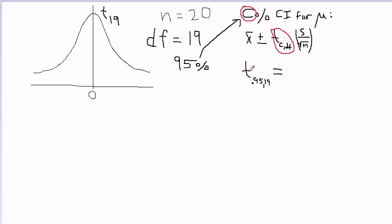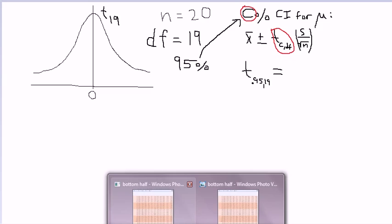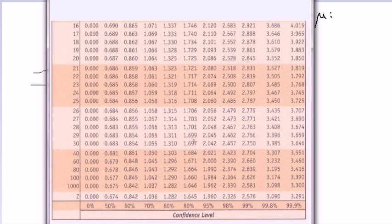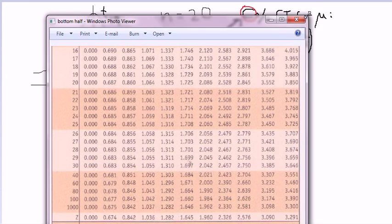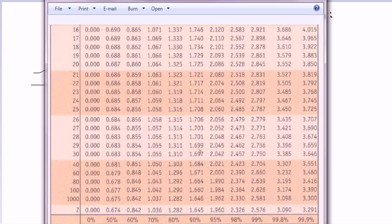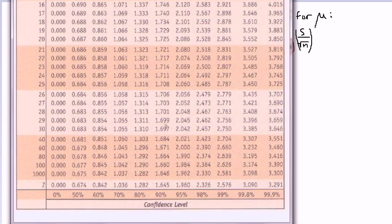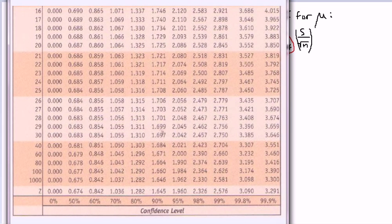This number comes from the table, and we replace it here. And x-bar and s and square root of n would all be things that you would just plug in. So this is the bit that comes from the table when you want to get a 95% confidence interval and your sample size is 19. So let me pull up the table.